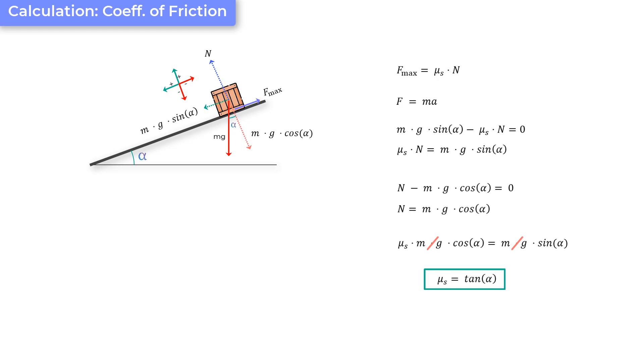So, what this equation means is that we can say that the static coefficient of friction between two specified surfaces is the tan of the angle at which the object just about starts moving. Now, one interesting thing you would have seen here is that the coefficient of static friction is independent of the mass. So, it's dependent on the nature of the two surfaces only.